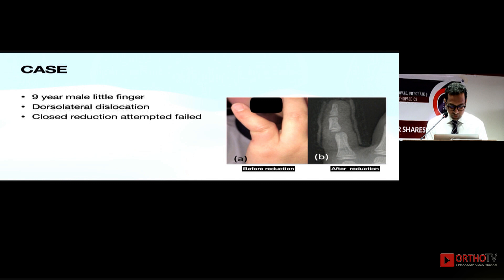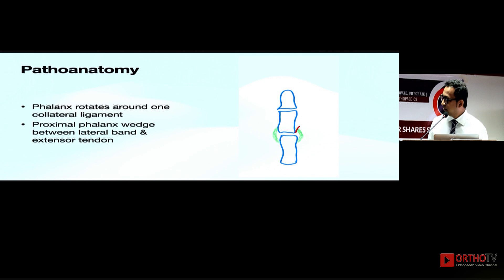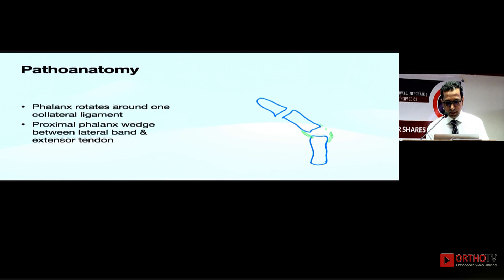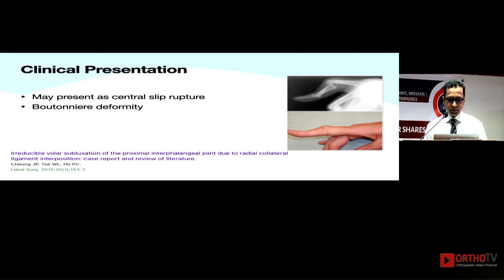Here is a case from the literature — a 9-year-old male who had an injury. Close reduction was attempted but could not be done properly, as you can see in the X-ray the joint is incongruent. So what went wrong? The pathoanatomy: disruption of the collaterals — either from the base of the middle phalanx or at the head of the proximal phalanx — then it rotates around the intact ligament, and the proximal phalanx wedges between the lateral band and the extension tendon. This commonly prevents close reduction. They usually present like a boutonnière deformity, looking like a central slip rupture.